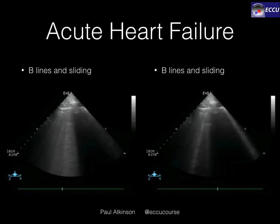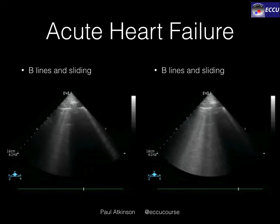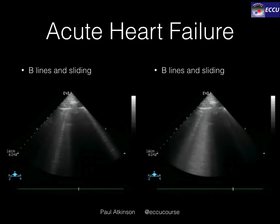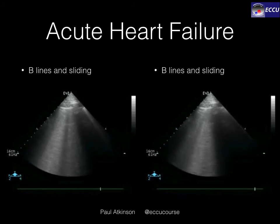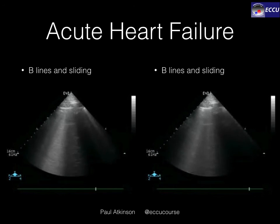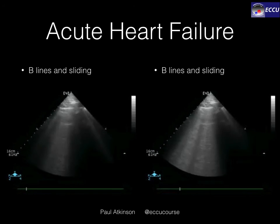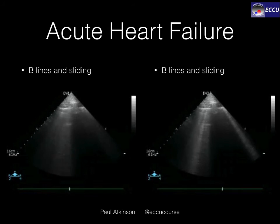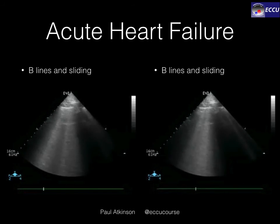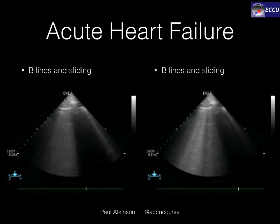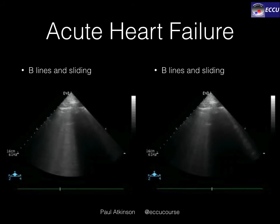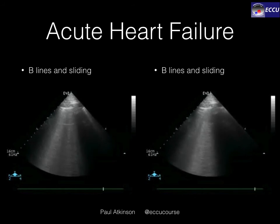In acute heart failure, however, you will see multiple B-lines in multiple zones of the chest. In fact, the more B-lines and the more zones that are involved, the better the predictive value of the test for ruling in heart failure. The sensitivity and specificity are in the high 80s.